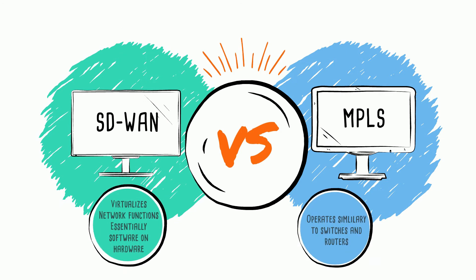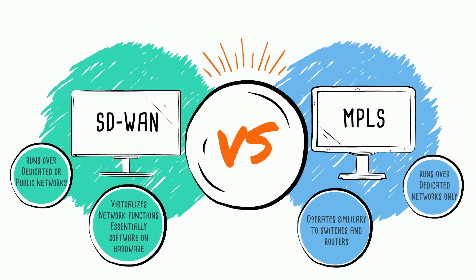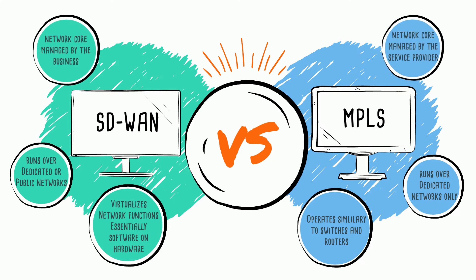SD-WAN operates at the software level, while MPLS is more akin to hardware. SD-WAN can run over any network, while MPLS requires a dedicated network. With SD-WAN, you manage the solution, whereas MPLS is managed by your service provider.